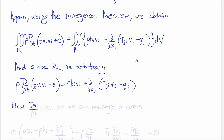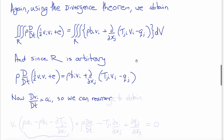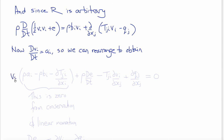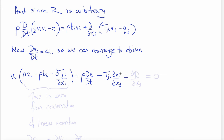Recognizing that the material derivative of the velocity dV_i/dt is A_i, the acceleration, we can rearrange the equation above to obtain: V_i times (rho A_i minus rho B_i minus ∂T_{ji}/∂x_i) plus rho dE/dt minus T_{ji} ∂V_i/∂x_j plus ∂Q_j/∂x_j equals zero.